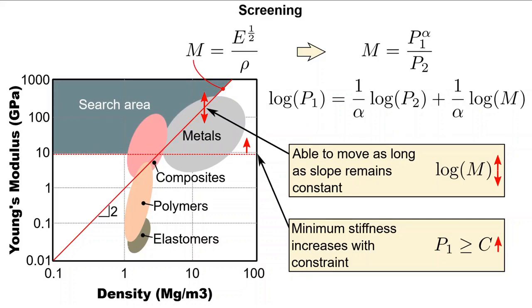The combination of both the performance index and the constraint now defines a search area. This search area now allows us to disallow or screen materials which are not suitable for the application.